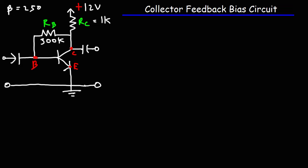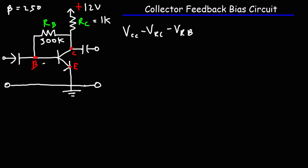We're going to use Kirchhoff's voltage law, which states that the sum of the voltage drops in a closed loop is 0. Starting with VCC, our collector supply voltage, we work toward ground: first through RC, then through RB, then from the base to the emitter through the NPN transistor — that's minus VBE — and that takes us to ground at 0 volts.